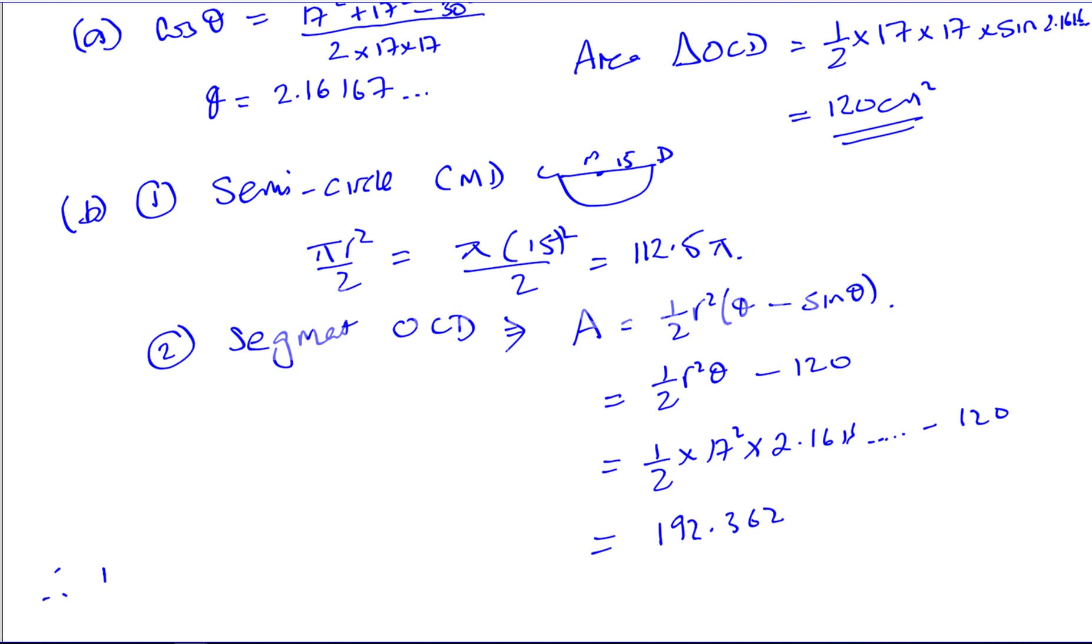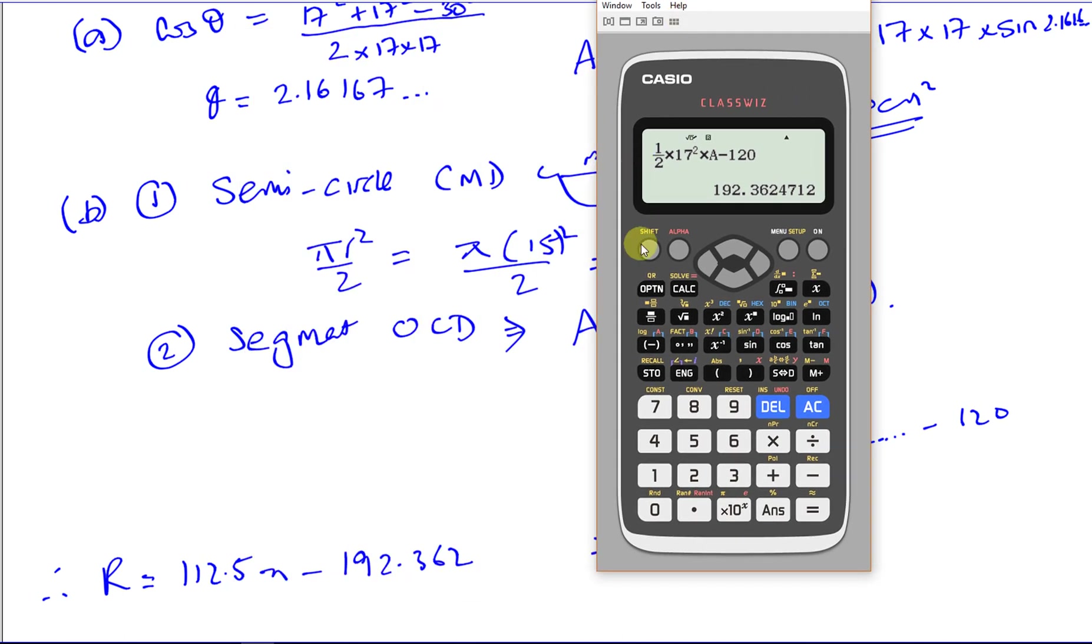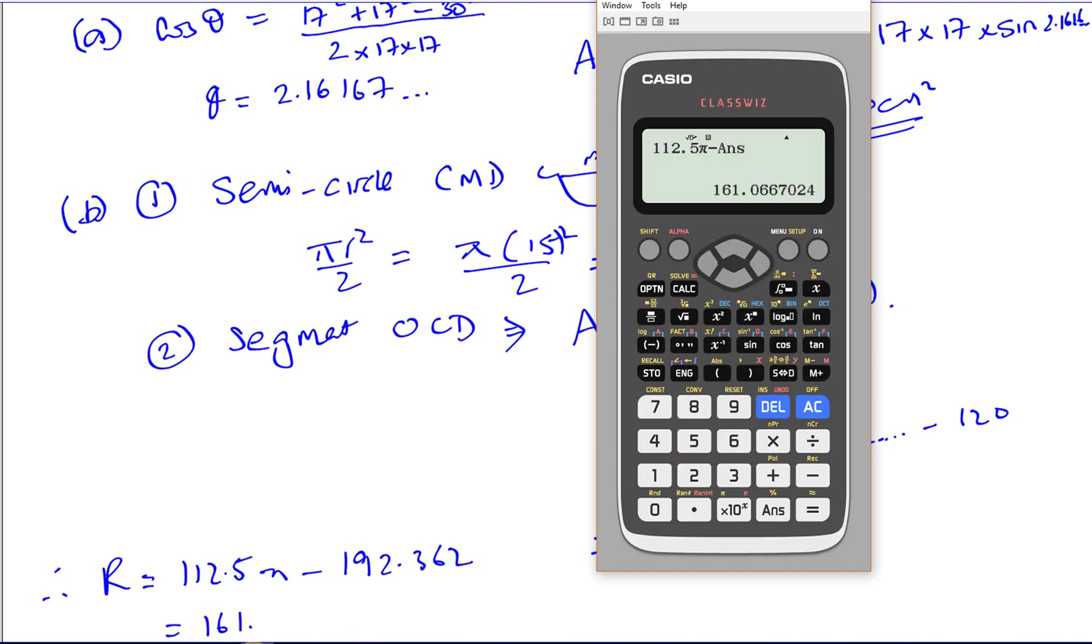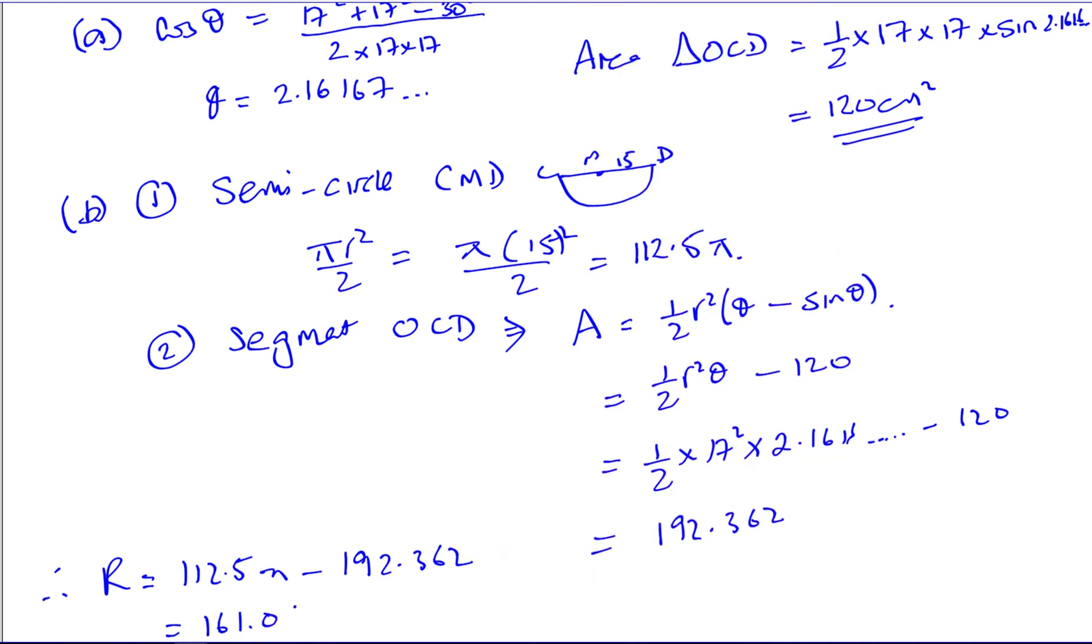Therefore the area of R is going to be 112.5 pi minus this area, which is 192.362. So what I can do is, I can say, 112.5 pi minus the last answer, which gives you 161.0667.